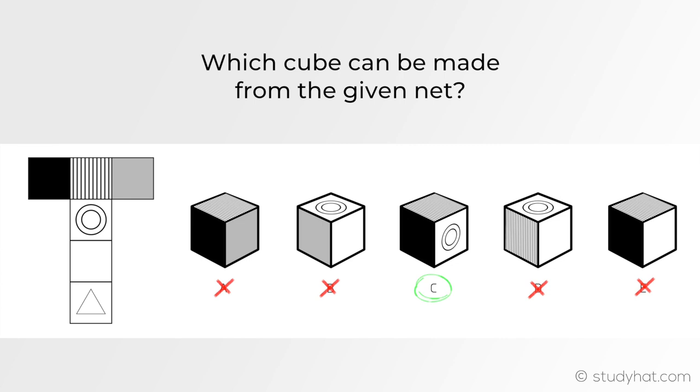Just to make sure C is the correct answer, it folds down with the circle face. Then the line is at the top, which means on the left hand side, the black face should be there, which it is. So therefore C is the correct answer.